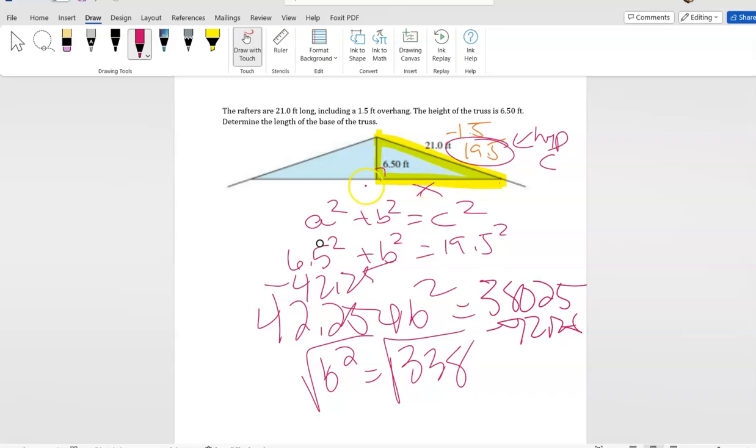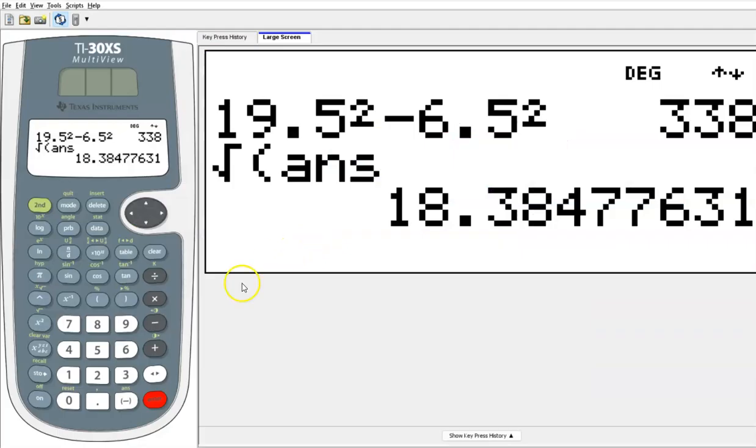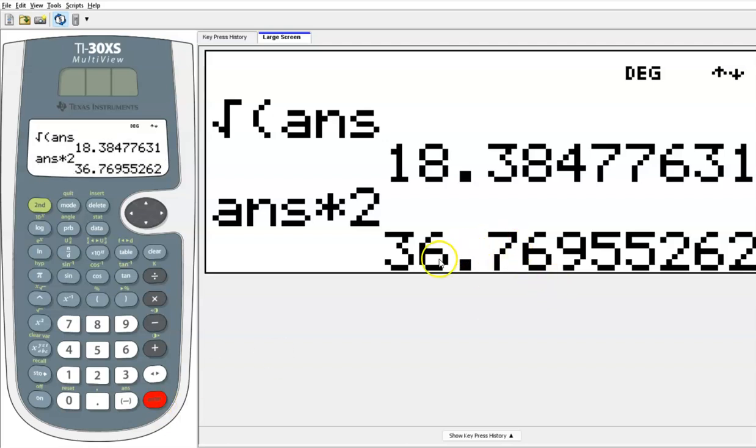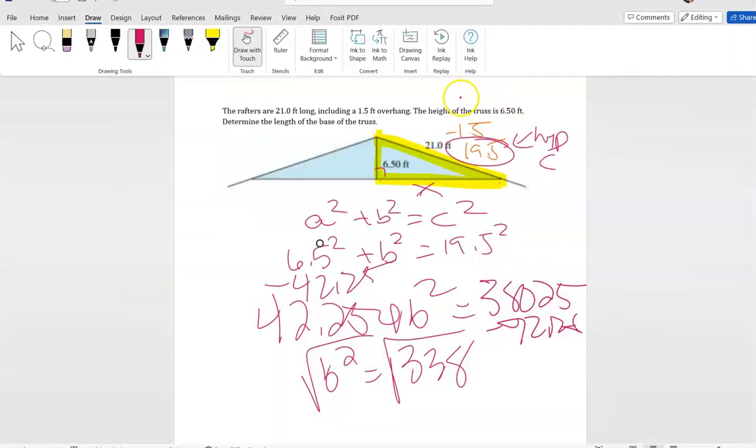So this is one side of it, right? I found one of these. I need both sides. So I'm gonna take this times two. And then the base of my truss is 36.77. Now when I look up here, you can see here that they gave us this with two decimal places. So I would make sure my answer is at least two decimal places. So my answer is 36.77 feet.